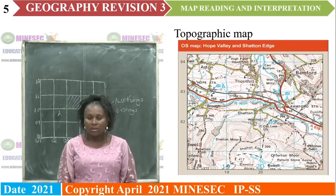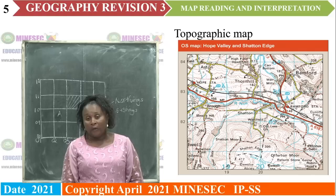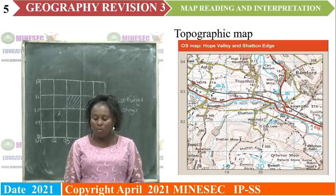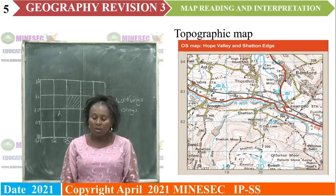On the topographic map, you see lines on them — some are red, some are blue. We also have features on a topographic map. These are the signs and symbols represented on a topographic map.